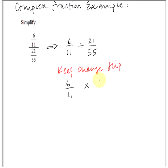and then flip the second fraction. So instead of writing 21 over 55, I'm going to write 55 over 21. Now we have a multiplication problem and we can continue forward using multiplication.